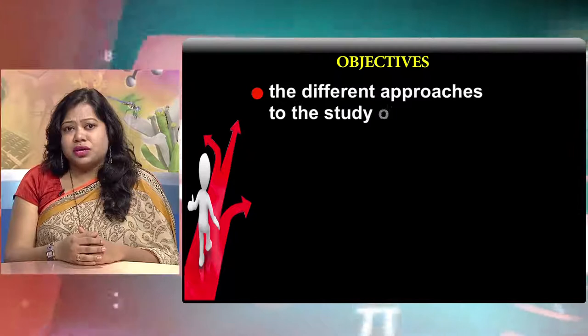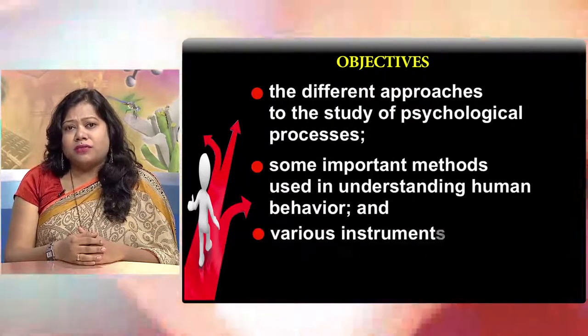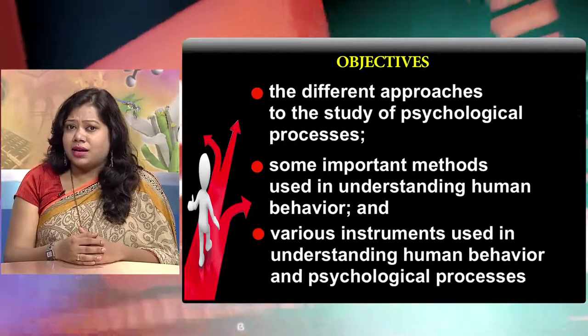A psychologist follows a systematic scientific procedure with a sound theoretical base in order to explain and interpret phenomena. Psychology has various methodological approaches to understand and explain psychological phenomena. In order to obtain responses from subjects, a number of psychological tools or instruments are used that constitute the basic data, which are analyzed to study human experiences, mental processes and behaviors. The objectives of this chapter on methods of psychology are to explain the different approaches to the study of psychological processes, describe some important methods used in understanding human behavior, and describe various instruments used in understanding human behavior and psychological processes.